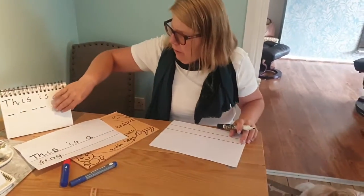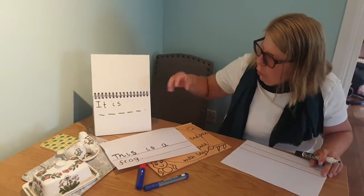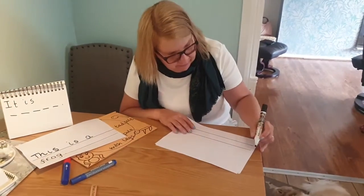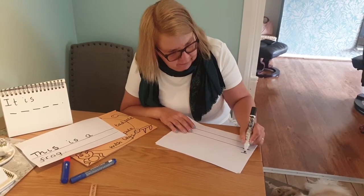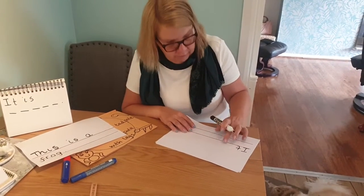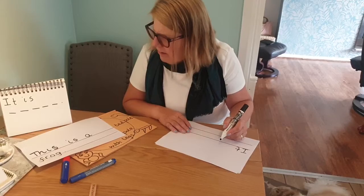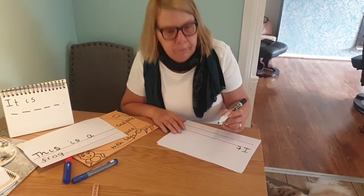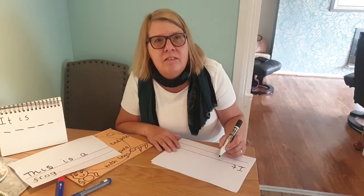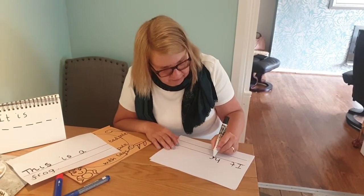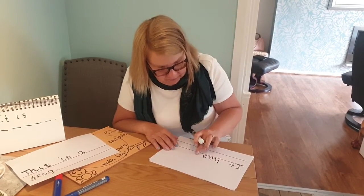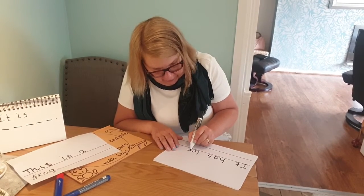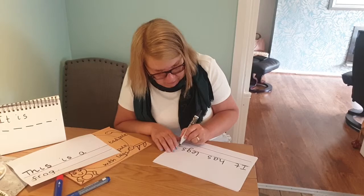My other sentence I thought of — I'm going to write 'It has legs.' H-a-s is a tricky one: H-a-s. Now legs — legs is easy to Fred Talk: L-e-g-s. And I'm going to add 'and big eyes.' Eyes is a really tricky word, so I just know the letter names: E-y-e-s. Can't sound that one out. It has legs and big eyes.